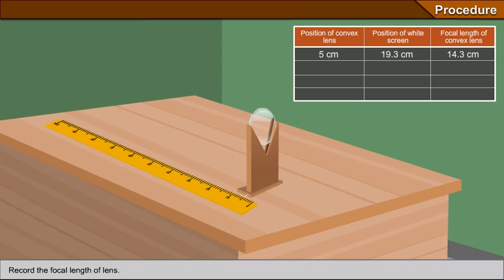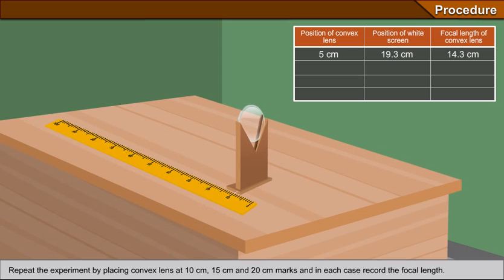Repeat the experiment by placing convex lens at 10 cm, 15 cm and 20 cm marks and in each case record the focal length.